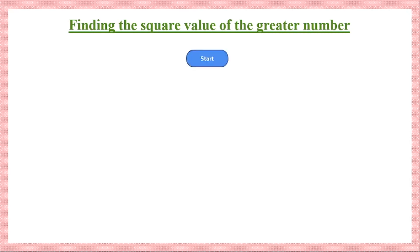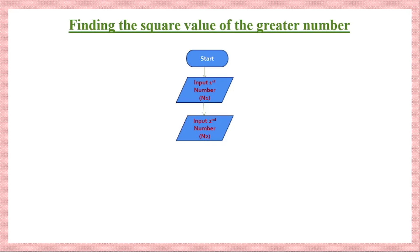Next we will draw a flowchart where we have two numbers, we find the greater one, take its square, and display the result. The first symbol represents the starting point of that flowchart. Then we need to know what the two numbers are, so we input the first number using the relevant input block, and once the first number is known we input the second number using the same type of symbol.